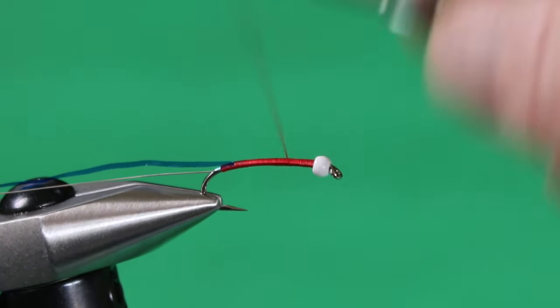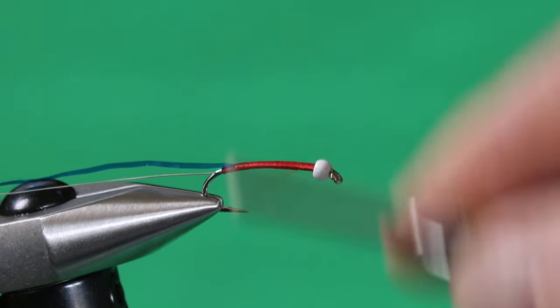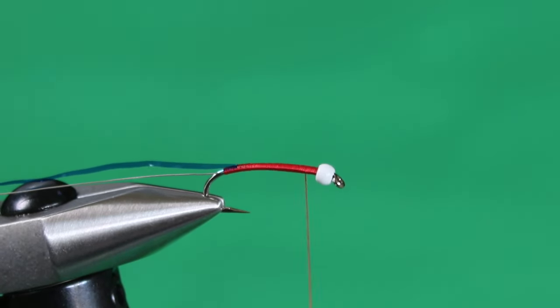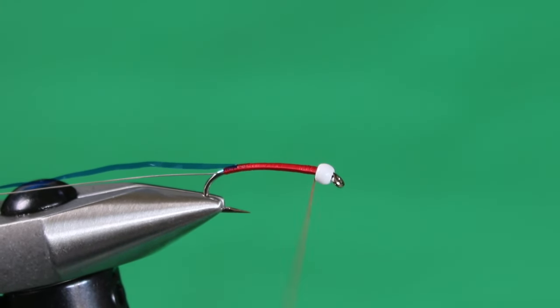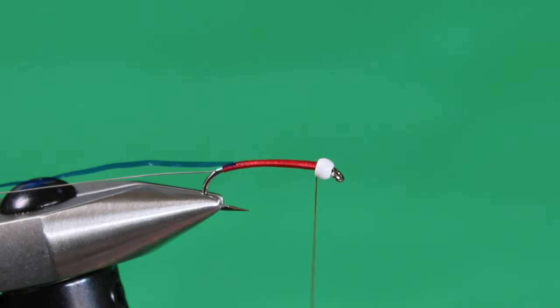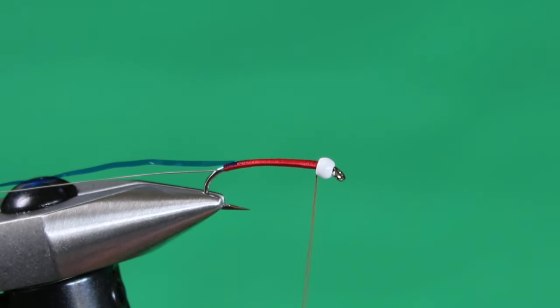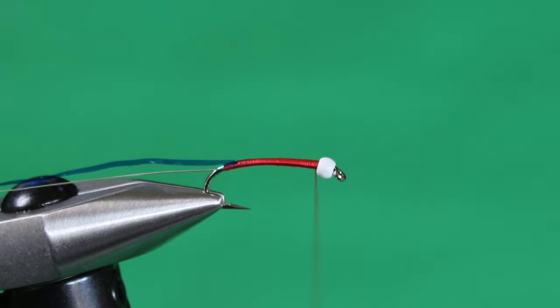So we've gone down the hook and back to the halfway point when we started. We've gone all the way down and now we're coming all the way back up. So we've got two and a half layers of thread on here. Now we're going to go down about three quarters of the shank.